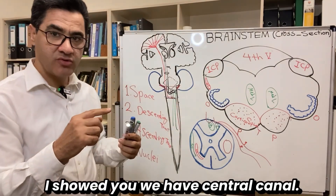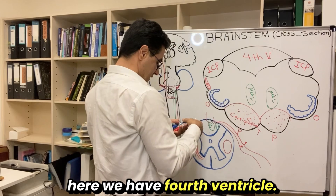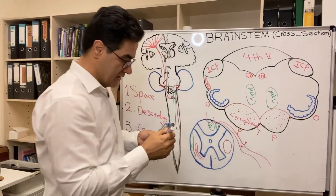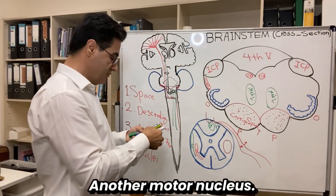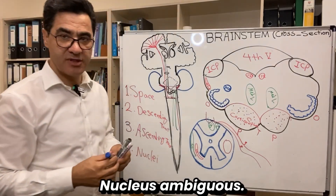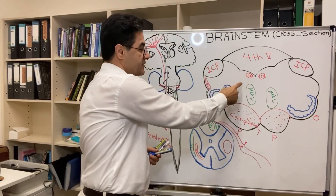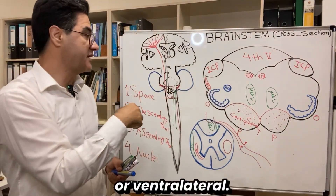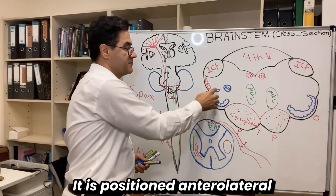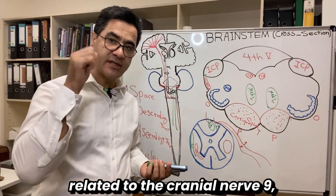In the previous section we had the central canal with the hypoglossal next to it. Here, instead of the central canal we have the fourth ventricle. Just inferior to the fourth ventricle we have the hypoglossal nucleus — cranial nerve 12 — a motor nucleus supplying the tongue muscles. Another motor nucleus positioned anterolaterally is called nucleus ambiguus. We have two types of motor nuclei: some are posteromedial (dorsomedial) and some are anterolateral (ventrolateral). Hypoglossal is dorsomedial; nucleus ambiguus is anterolateral, containing motor neurons for cranial nerves 9, 10, and 11.